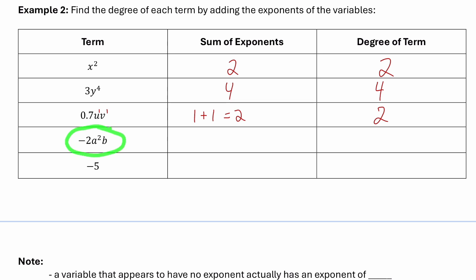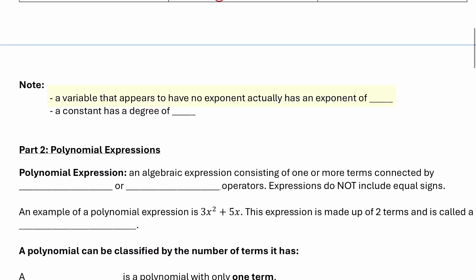The next term, negative 2a squared b — the exponents on the variables are 2 and 1. Two plus 1 is 3, which means that term is degree 3. The last term is just a constant, negative 5. There is no variable part, so there are no exponents on any variables, which means that term is degree 0. Any constant is a degree 0 term. Note: a variable with no visible exponent has an exponent of 1, and a constant is always a degree 0 term.